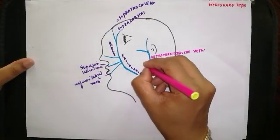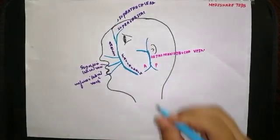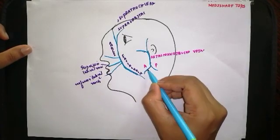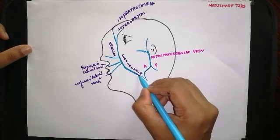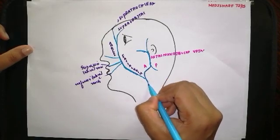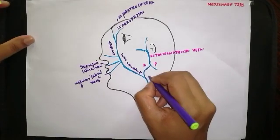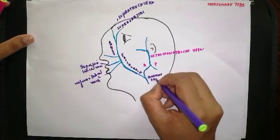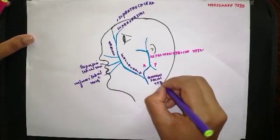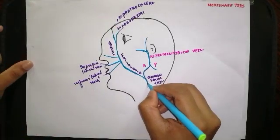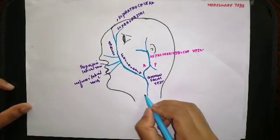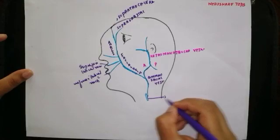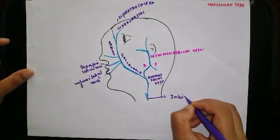The anterior division (A) and posterior division (B) of the retromandibular vein are distinct. The facial vein joins the anterior division of the retromandibular vein to form the common facial vein, which drains into the internal jugular vein.